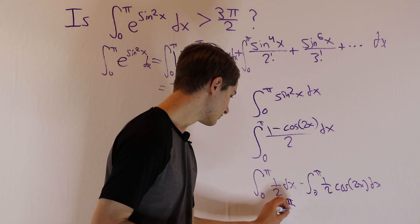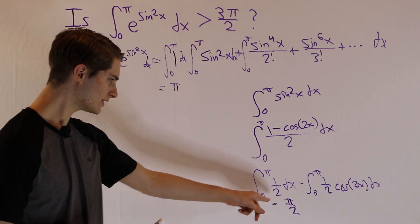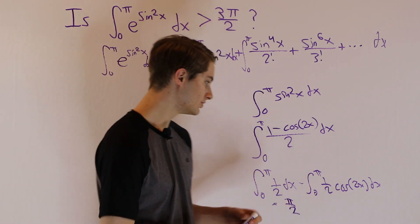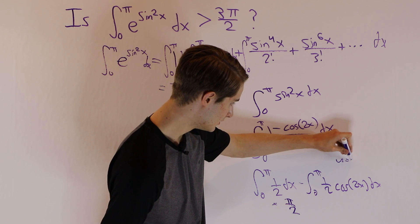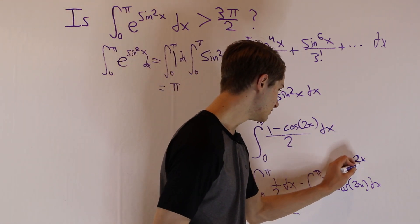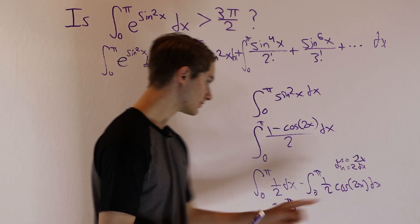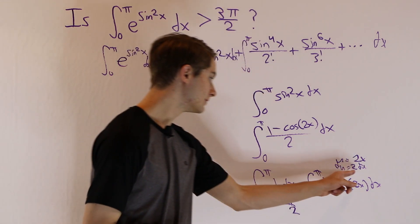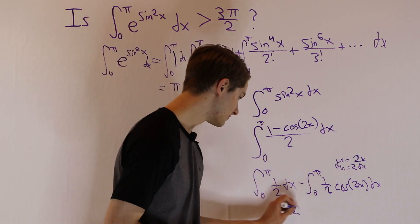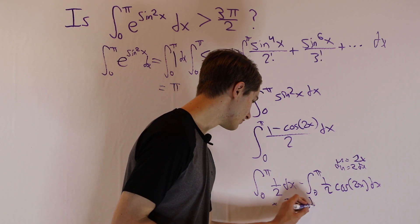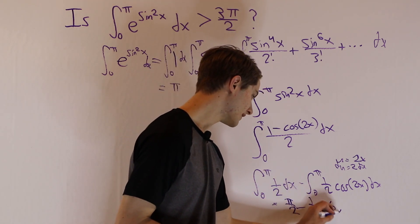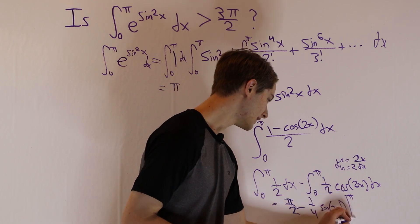And then the next part, 1 half cosine 2x. Well, if we did a substitution here, we would have u equals 2x. And then our du would be 2dx. So in order to get this dx into a du, we would have to divide by 2 on both sides. So we have a 1 half, but then we're going to multiply by 1 half again to get 1 fourth. And then we'll have sine 2x evaluated at π and 0.